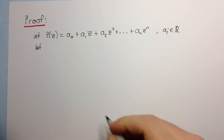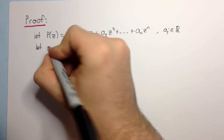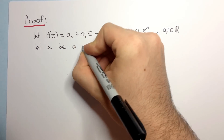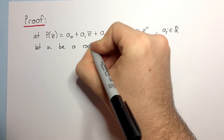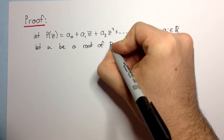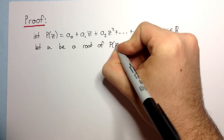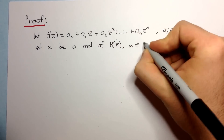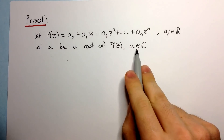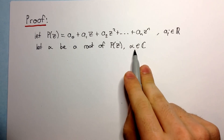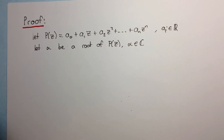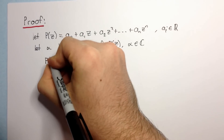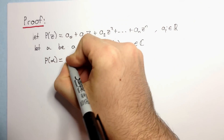Now let's say that we have a complex solution alpha. Let alpha be a root of P of Z, where alpha is a complex number — so it's a complex root. If alpha is a root of P of Z, we have that P of alpha is equal to zero.